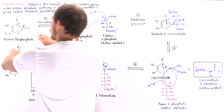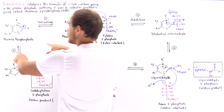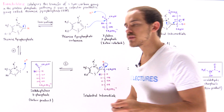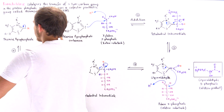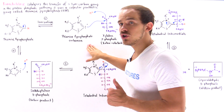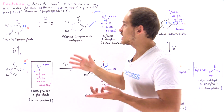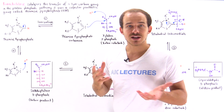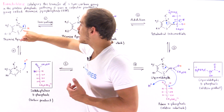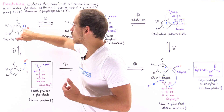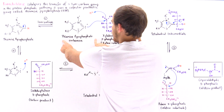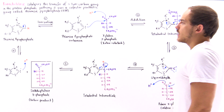Looking at this diagram, the thiamine pyrophosphate is attached to the enzyme. In step 1, it transforms from a poor nucleophile to a good nucleophile via an ionization reaction, in which a hydrogen ion departs, leaving a full negative charge on the carbon. This forms the thiamine pyrophosphate carboanion intermediate.